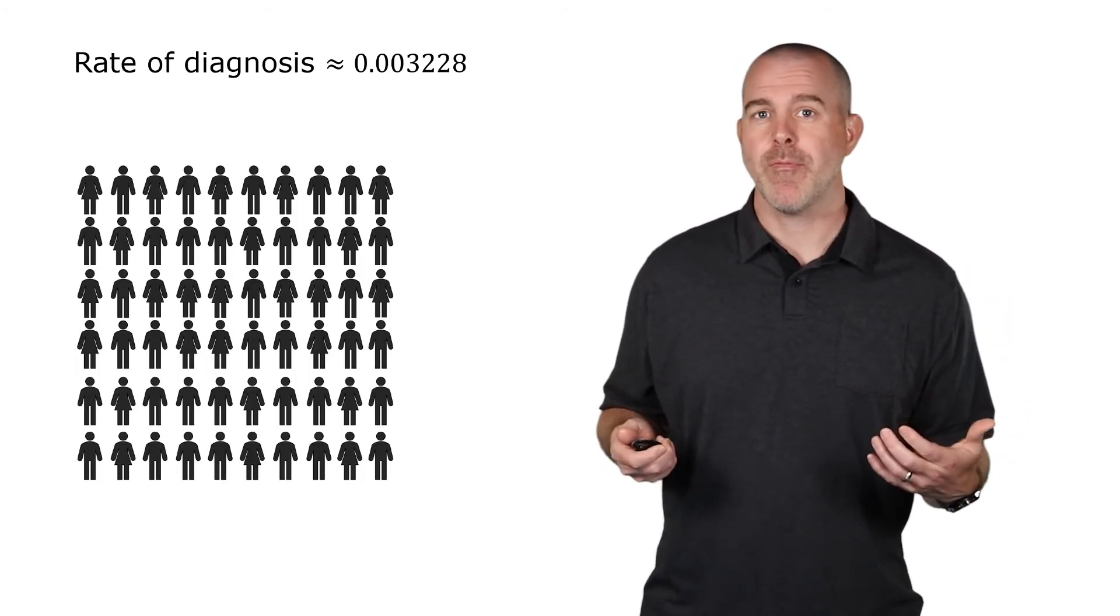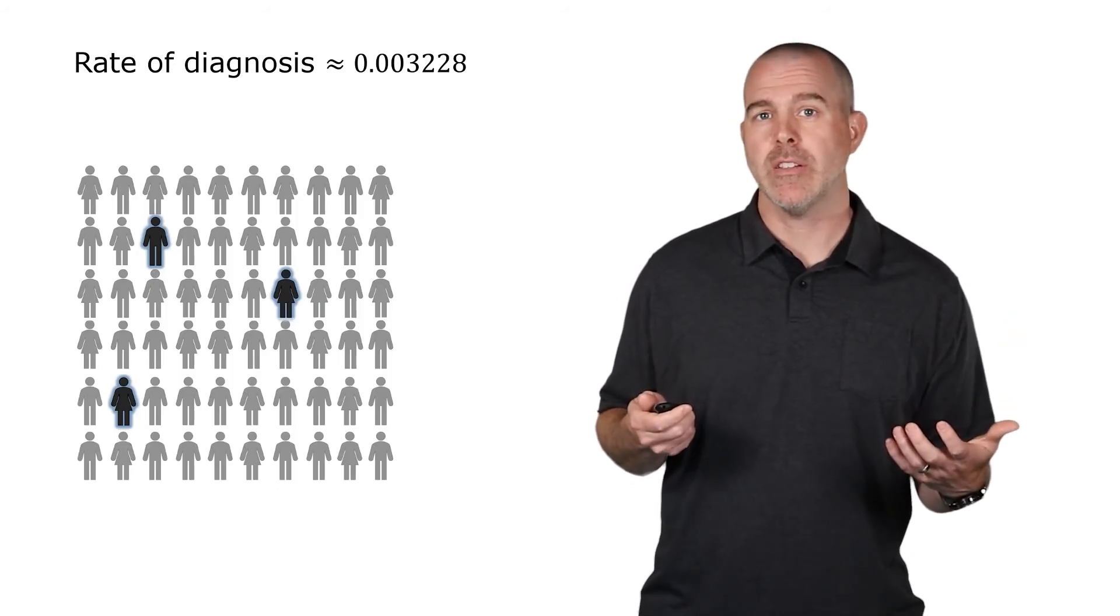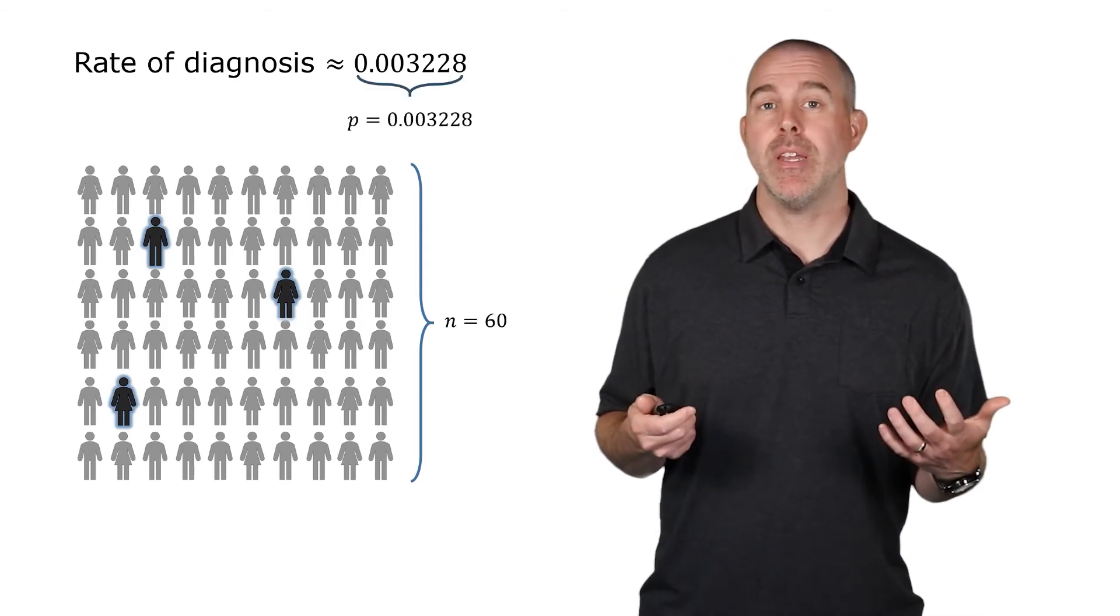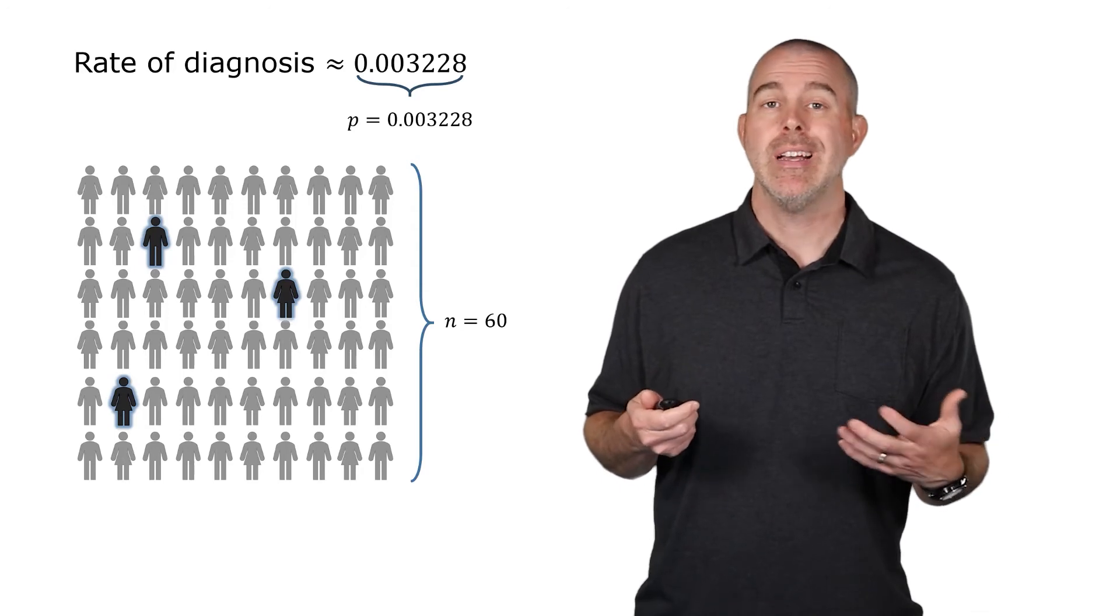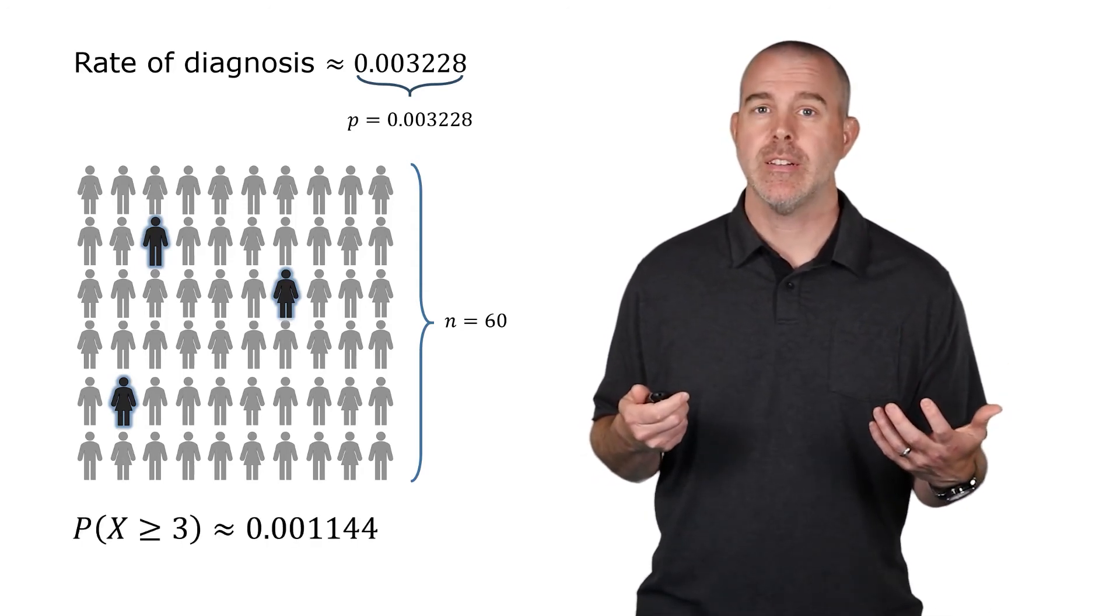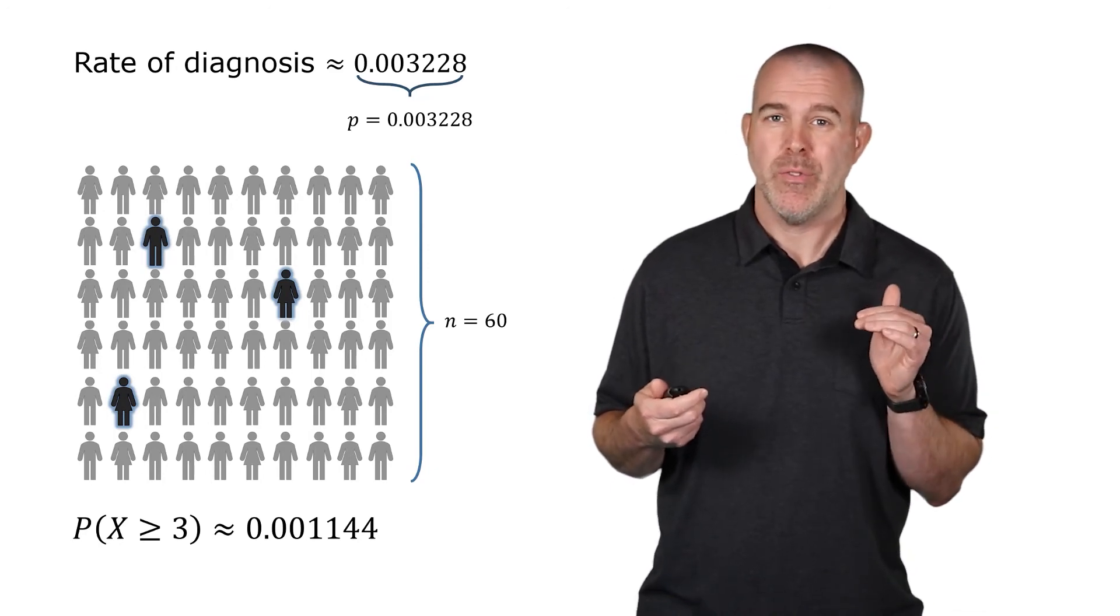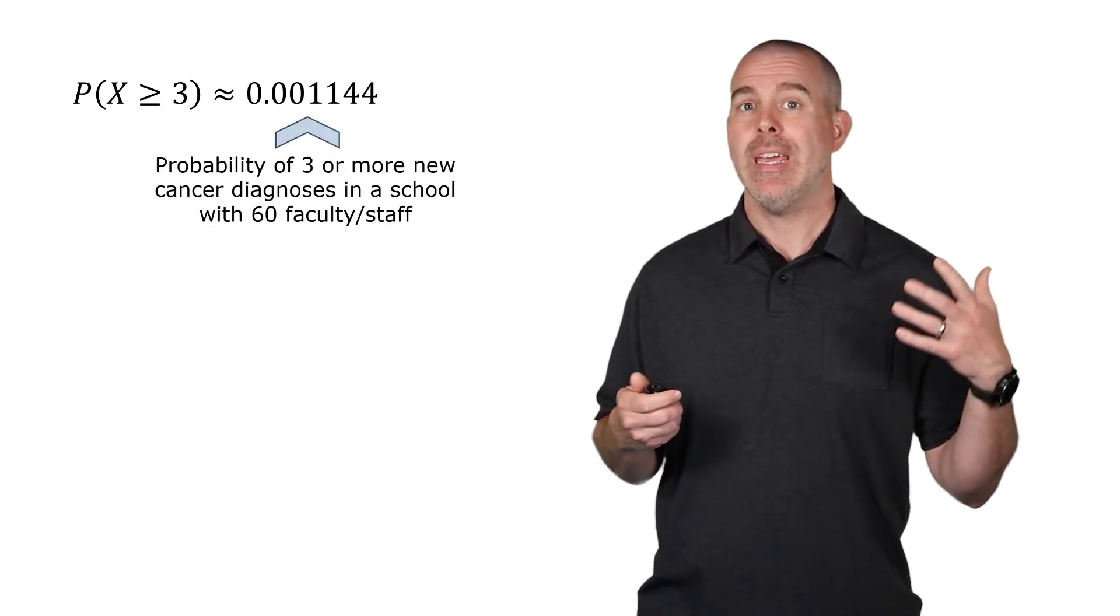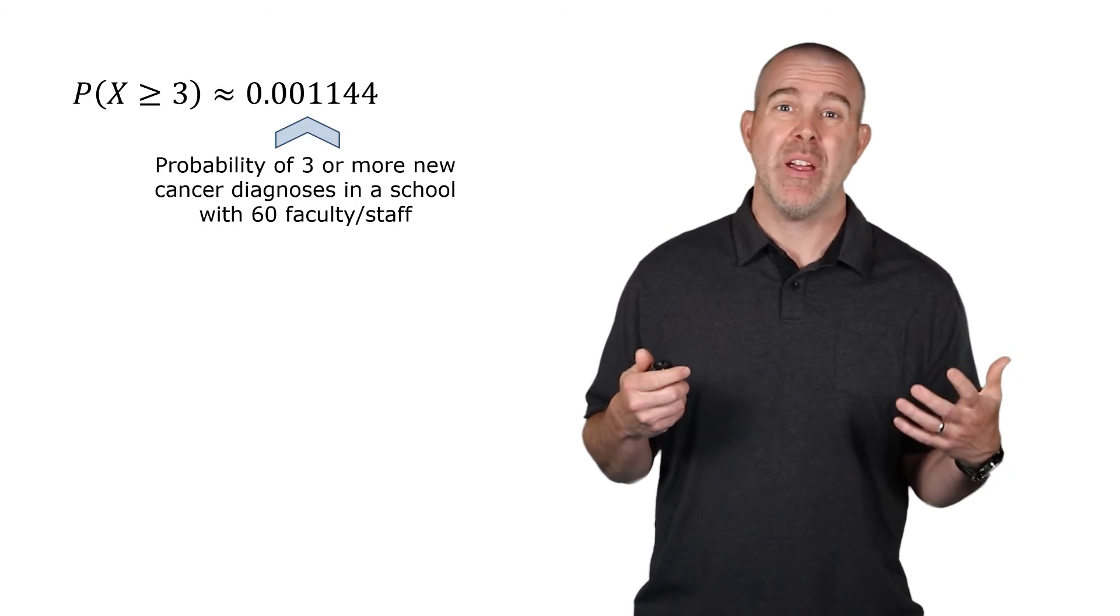If we have 60 staff members, we want to know what's the probability that three of them get cancer. Well, then our n is 60. And our probability of success is that probability 0.003228. Let's find the probability of getting at least three sick. And that's about, it's pretty small, 0.00114. So, if you look at one school, the probability of three teachers getting diagnosed with cancer in a given year, very, very small.